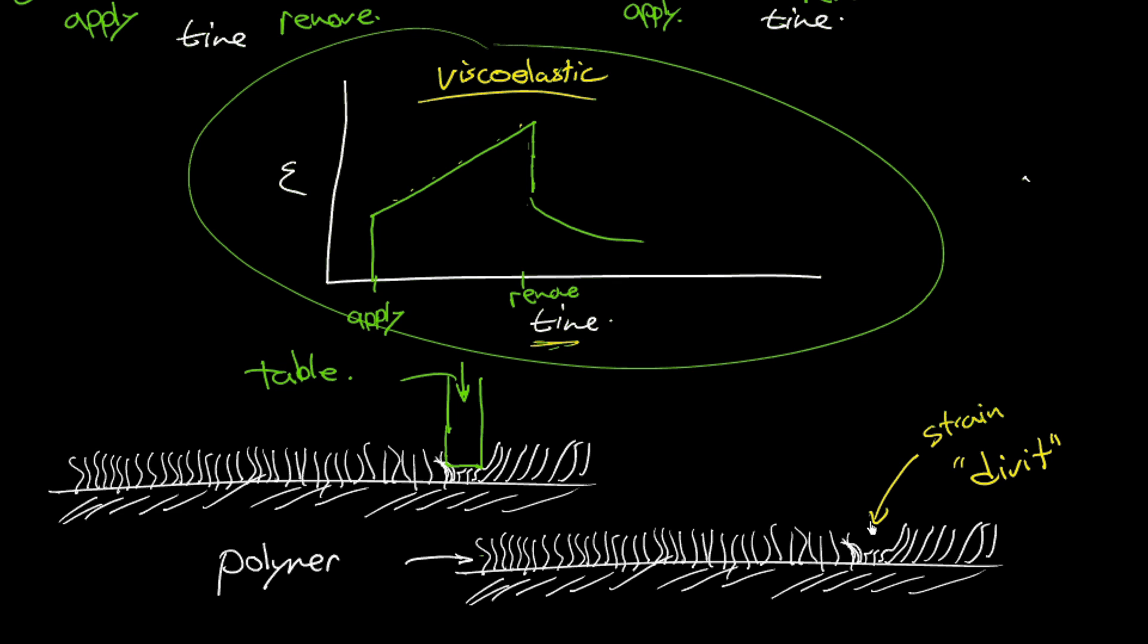Now, if you want to get rid of the divot, what do you do? You reverse the load. You reverse the load by vacuuming it. And eventually, if you're lucky and you're persistent enough, you can recover this time dependent strain and get back down to zero strain, where your carpet is sticking back up. So that's viscoelasticity. And I hope that helps.